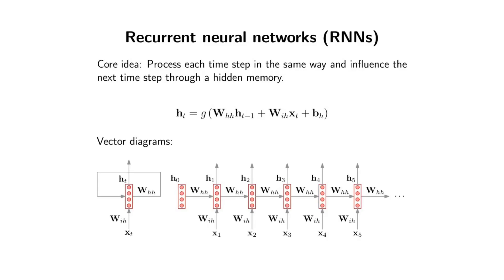Recurrent neural networks. The core idea is that you process each time step in the same way and influence the next time step through a hidden memory. So every time step you will process the input in the same way, but that hidden representation at that time step will get influenced by what happened in the past. Very often you would see them condensing this idea into a vector diagram to just indicate the recurrence.